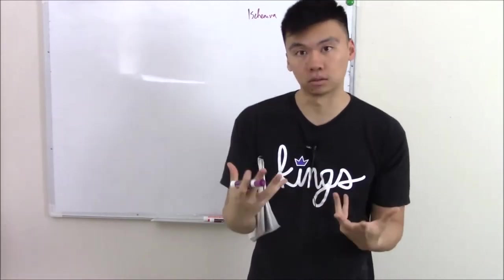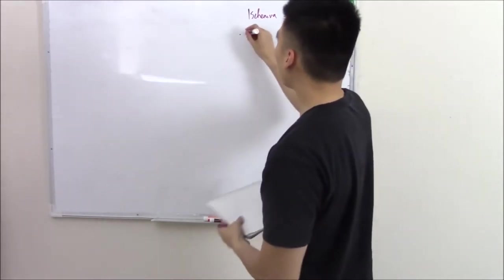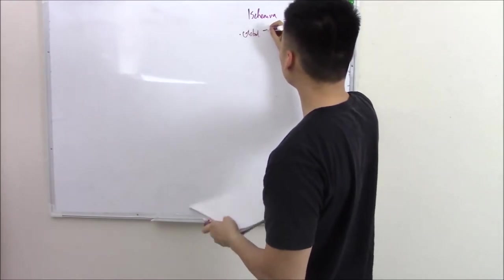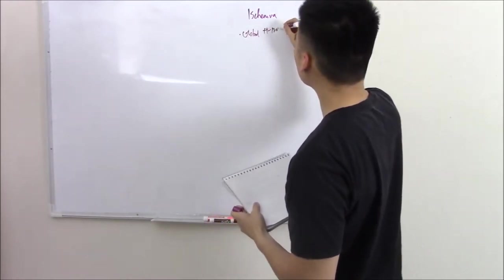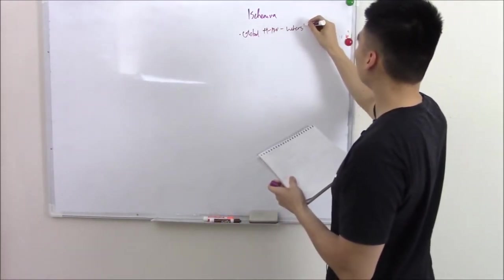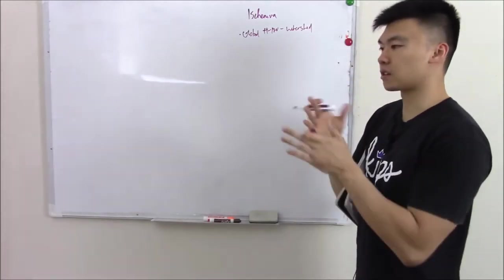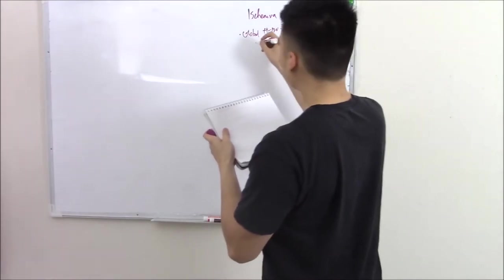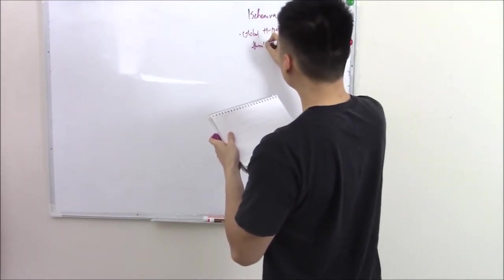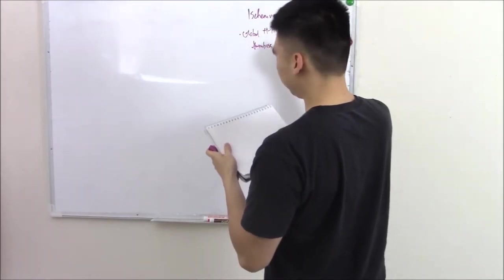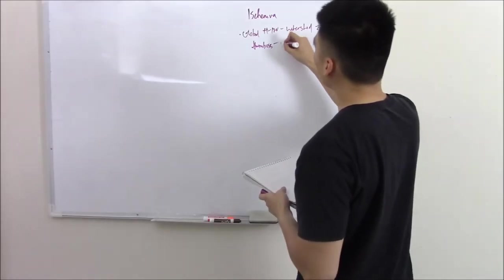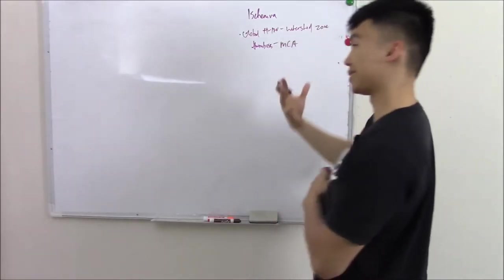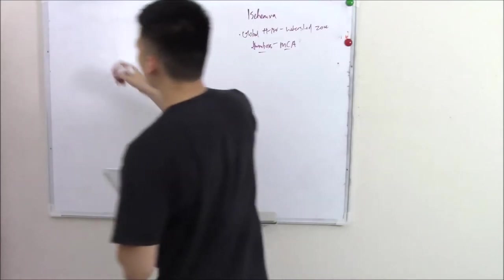We also talked about you can have thrombosis. So right, global hypotension, and we said that was your watershed zones. You get those wedge-shaped infarcts. Those are the areas between your artery supplies. We said thrombosis, which seems to be most commonly seen in your MCA. Why is that? Well, we redraw our circle willis.